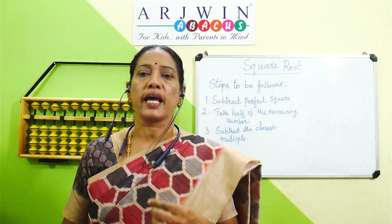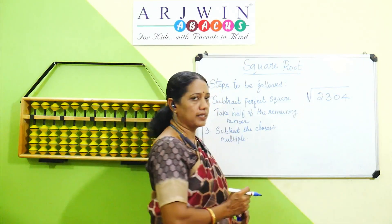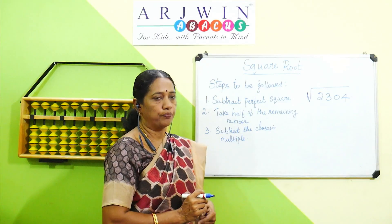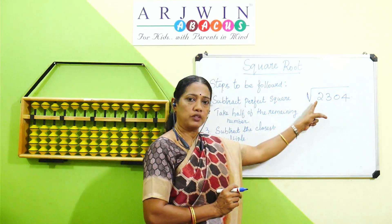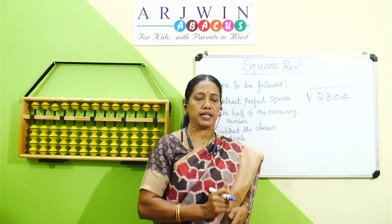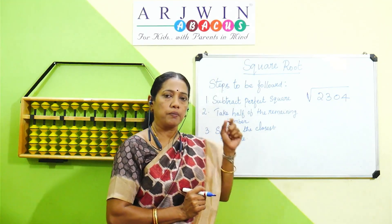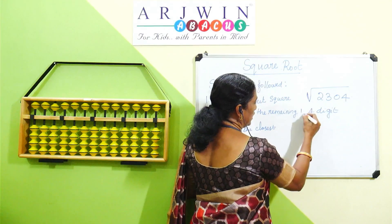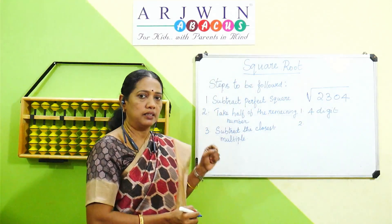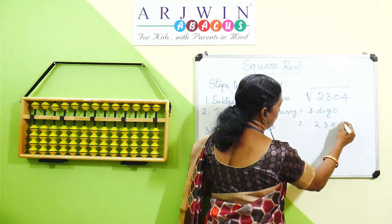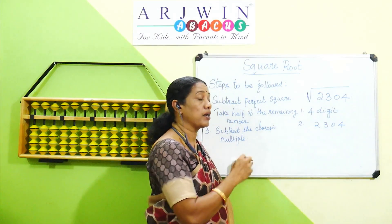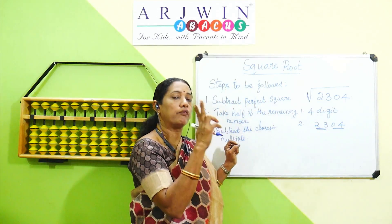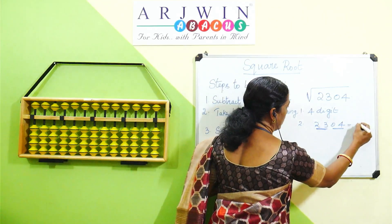I will explain with an example. Let us take the square root of 2304. It is a 4-digit number. We need to place this number on the abacus. First, let us make pairs starting from the right side: 04 is one pair and 23 is another pair, so we have 2 pairs.